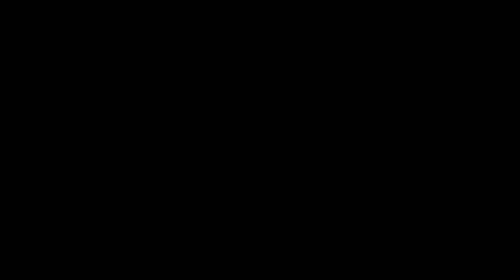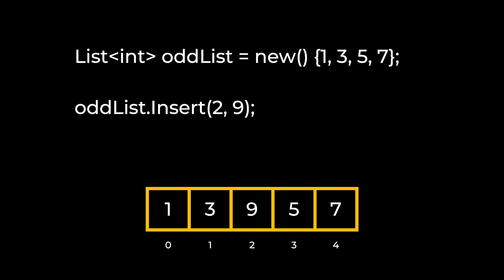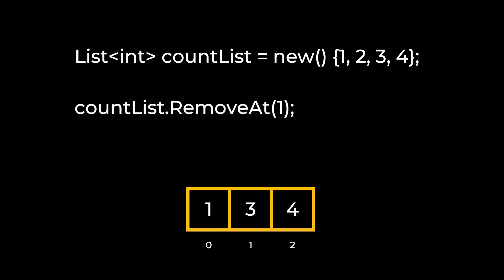You can add an element at a specific index using the Insert method. Insert takes the index where you want to insert the element as the first argument and the element itself as the second argument. It will insert the element at the specified index and push all displaced elements to a higher index. If you try to pass an index that is not within the bounds of the list, you will get an ArgumentOutOfRange exception error. You can remove an element at a specific index using RemoveAt. RemoveAt takes the index of the element you want to remove and removes it if that index exists, shifting all higher-indexed elements down one. If the index is out of range, you will again get an ArgumentOutOfRange exception error.